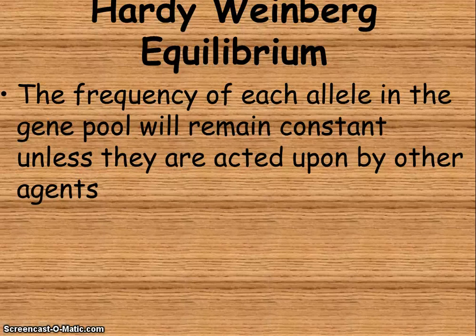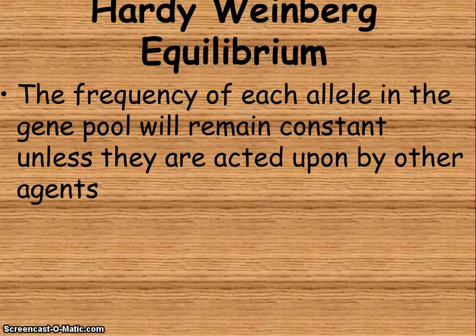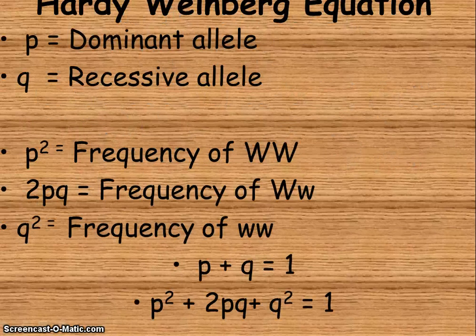So back in early 1900s, 1908 or so, there were two guys. There was Hardy, which was a British mathematician, and Weinberg, which was a German physician. They got together and were trying to figure out what was happening. So they came up with this Hardy-Weinberg equilibrium equation.